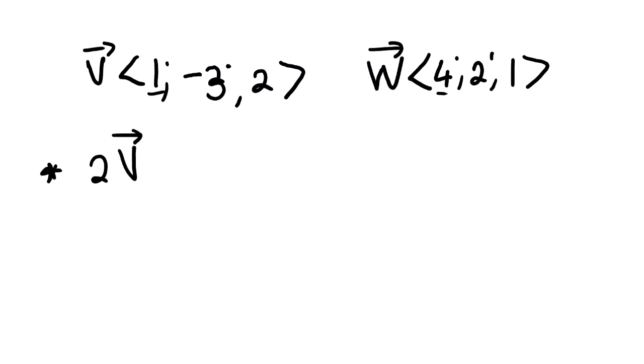Our next question: what is two multiplied by vector v? Two is actually a scalar multiplication. How do we multiply a scalar onto a vector? We simply multiply each and every coordinate by two. So one multiplied by two is two, negative three multiplied by two is negative six, two multiplied by two is four.